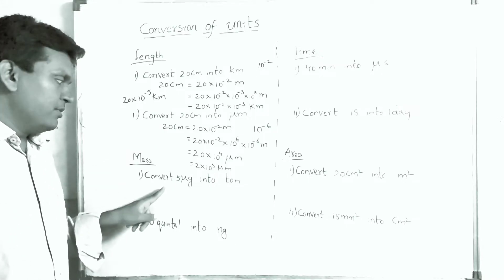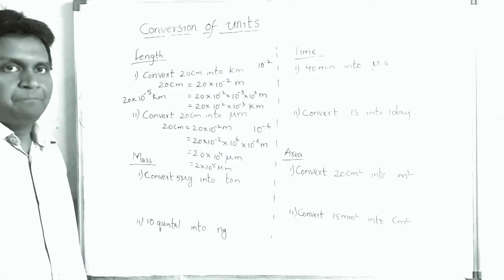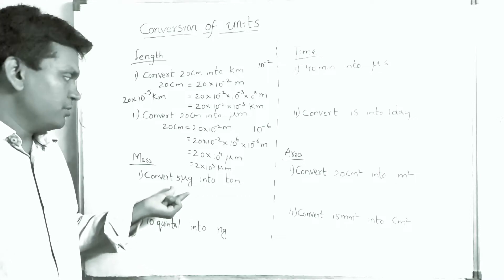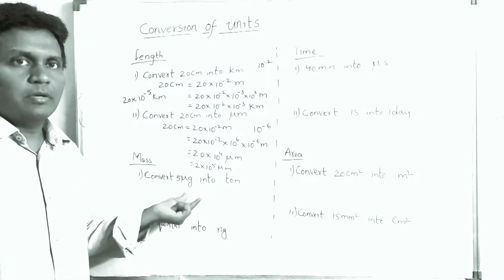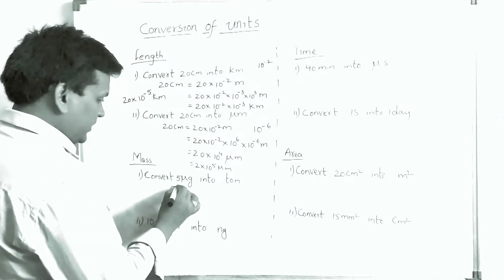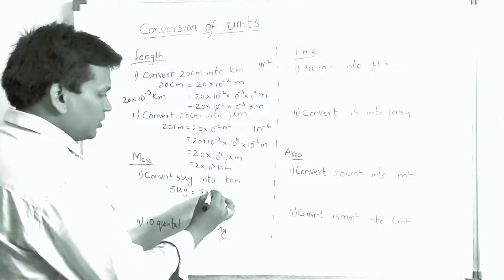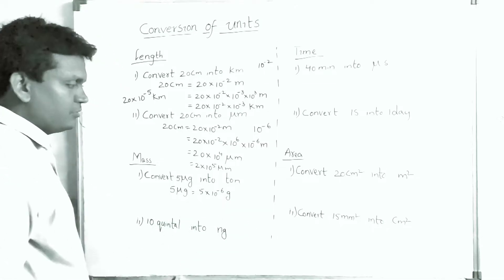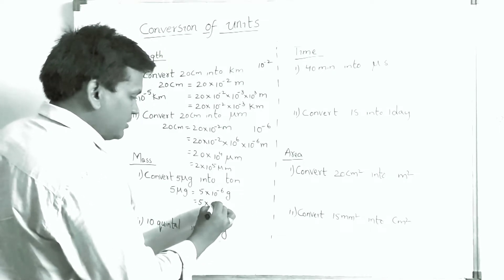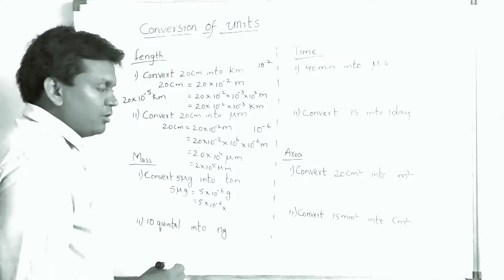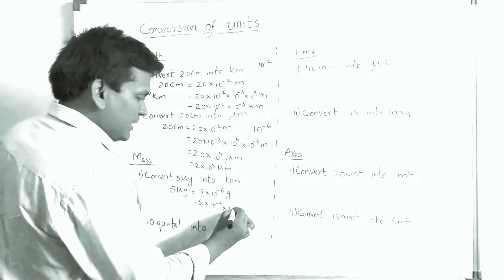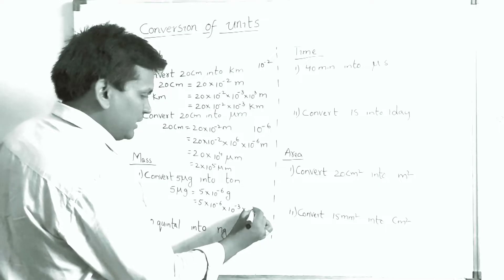Now coming to mass. Convert 5 micrograms into tons. Same process: first convert into grams, then into kilograms, then into tons. 5 micrograms = 5 × 10⁻⁶ gram. Now convert into kilogram: 5 × 10⁻⁶ × 10⁻³ (writing kilo as 10⁻³ × 10³) kilogram.